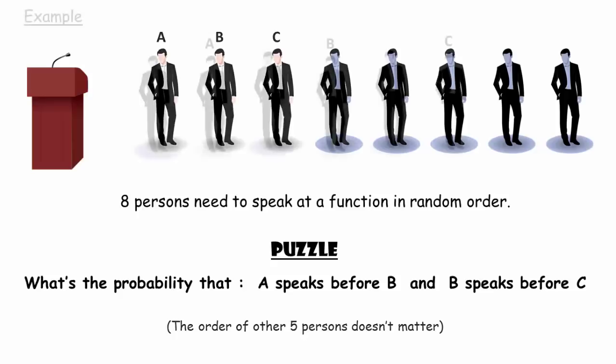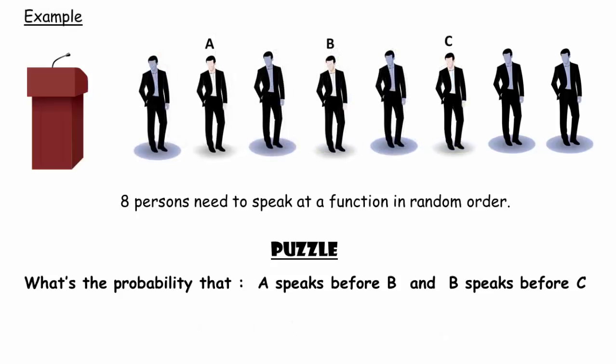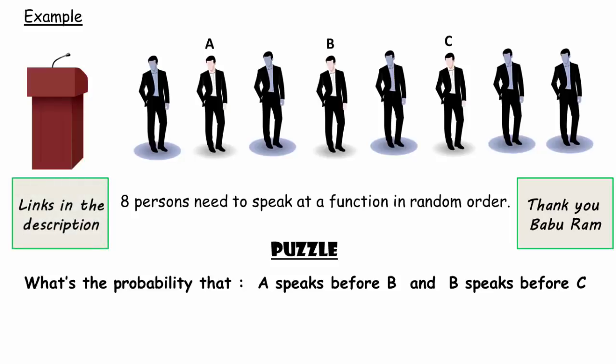For example, this is a valid sequence where A speaks before B and B speaks before C. I am thankful to Mr. Baburam who shared this question on Facebook. It was asked to him in an interview at a software organization. I highly encourage all of you to share as many questions as you can on my Gmail or Facebook and contribute to this logical community.